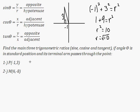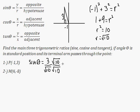Now we want to know sine of theta. Sine of theta is equal to y over r, which is the square root of 10. So y is 3 over root of 10. I want to rationalize this because I don't want to see a radical on the bottom of the fraction. So multiplying by root 10 over root 10, I get 3 root 10 over root 100, which is 3 root 10 over 10. So that is the sine of theta.